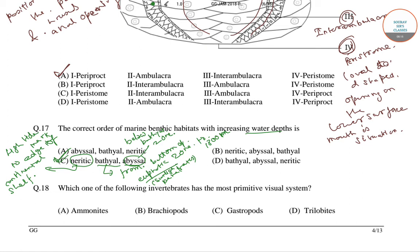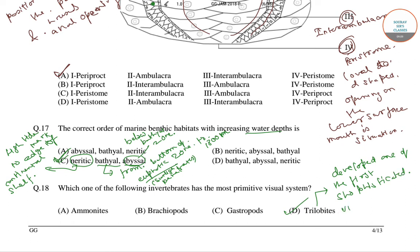The next question asks which one of the following invertebrates has the most primitive visual system. The correct answer is option number D, that is, trilobites. Even though they are not the first animals with eyes, trilobites are the first to develop one of the most sophisticated visual systems in the animal kingdom.